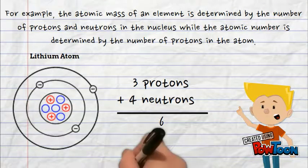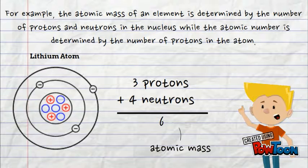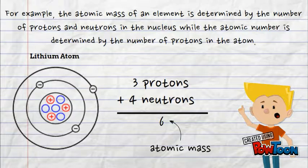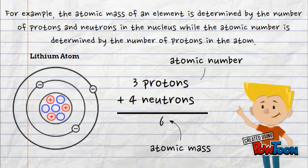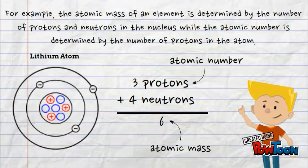For example, the atomic mass of an element is determined by the number of protons and neutrons in the nucleus, while the atomic number is determined by the number of protons in the atom.